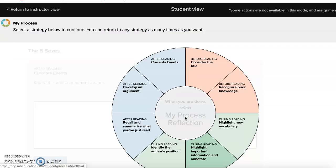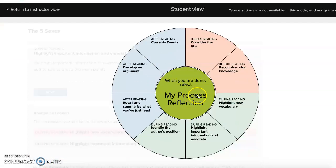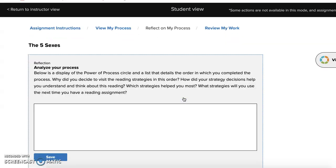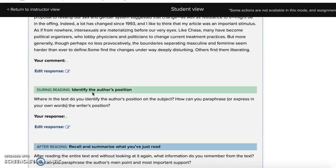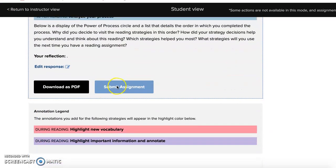Once I have completed each of these reading strategies, this circle is going to turn green and I'm going to be able to reflect on this process. I'll be asked to analyze my process and what strategies I have used. I could then see a summary of all my responses and all my highlighting and then go ahead and submit my assignment.